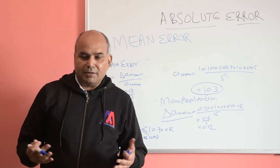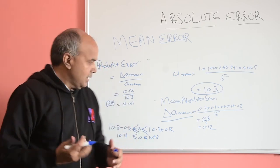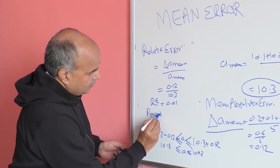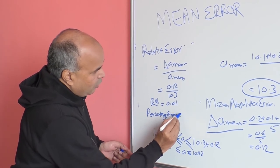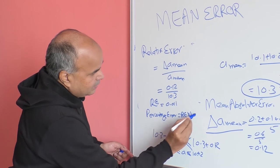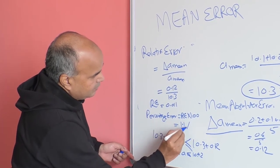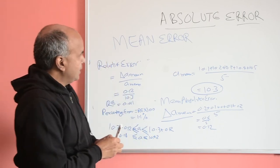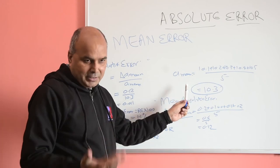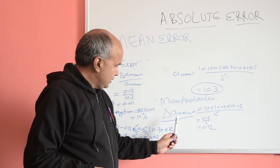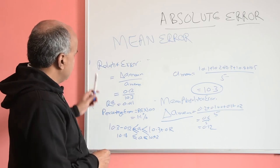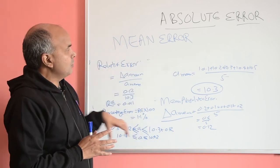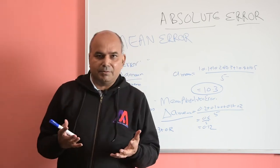The relative error can be converted into percentage error by multiplying by 100. So percentage error = 0.011 × 100 = 1.1%. We have now covered the mean value of measurement, mean absolute error, relative error, and percentage error — the key concepts of error measurement.